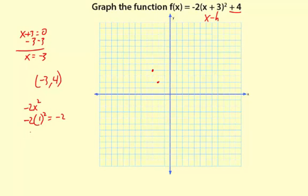And the next point I'm going to use is 2 to the right. So negative 2 times 2 squared, that's the same thing as negative 2 times 4, which is negative 8. So I'm going to go 2 to the right from the vertex and then 8 down.